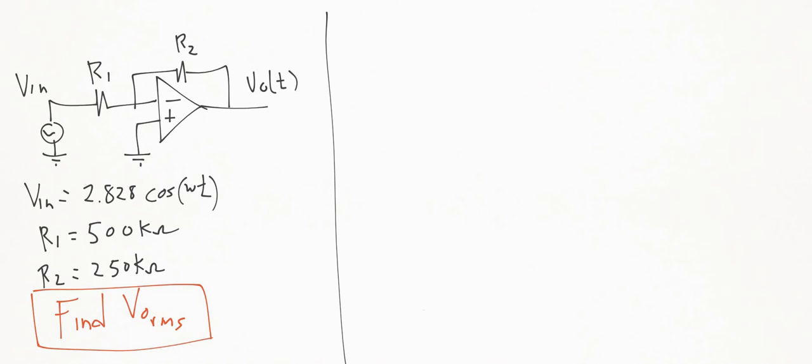And we have two resistors here. R1 is 500k, and the feedback resistor, R2, is 250k.